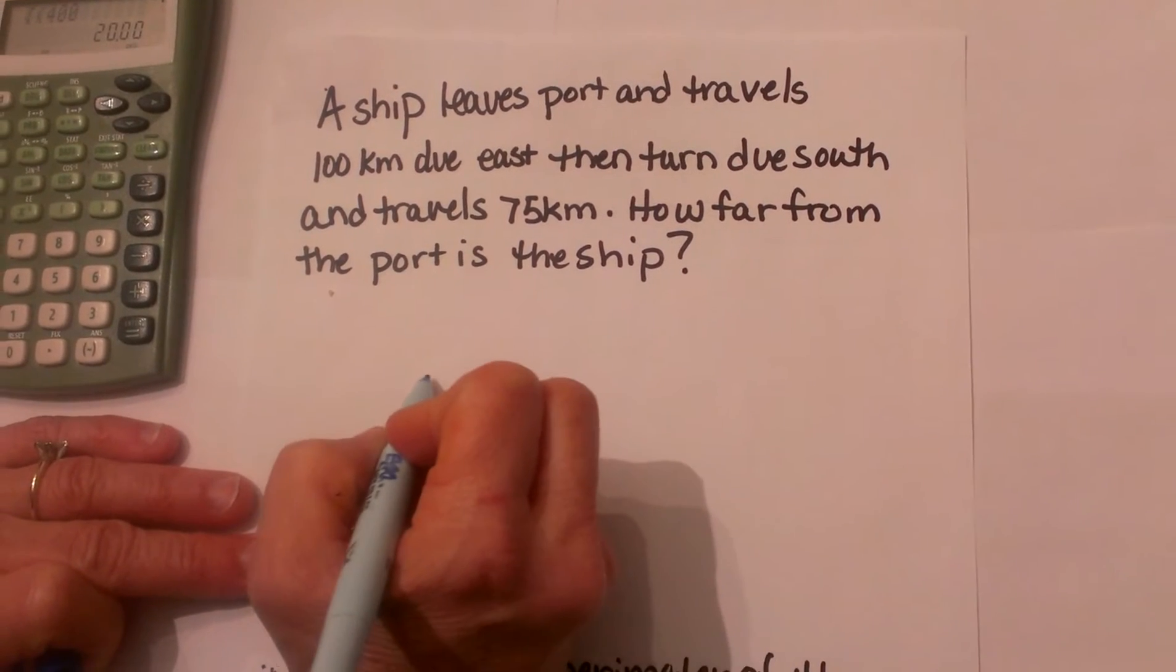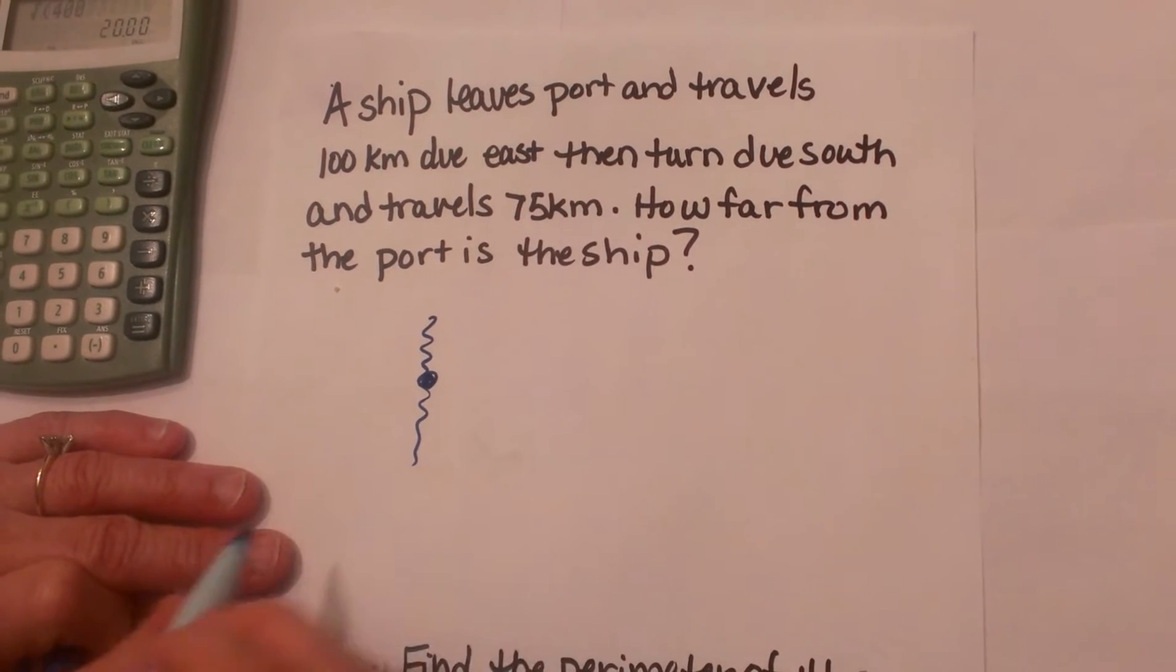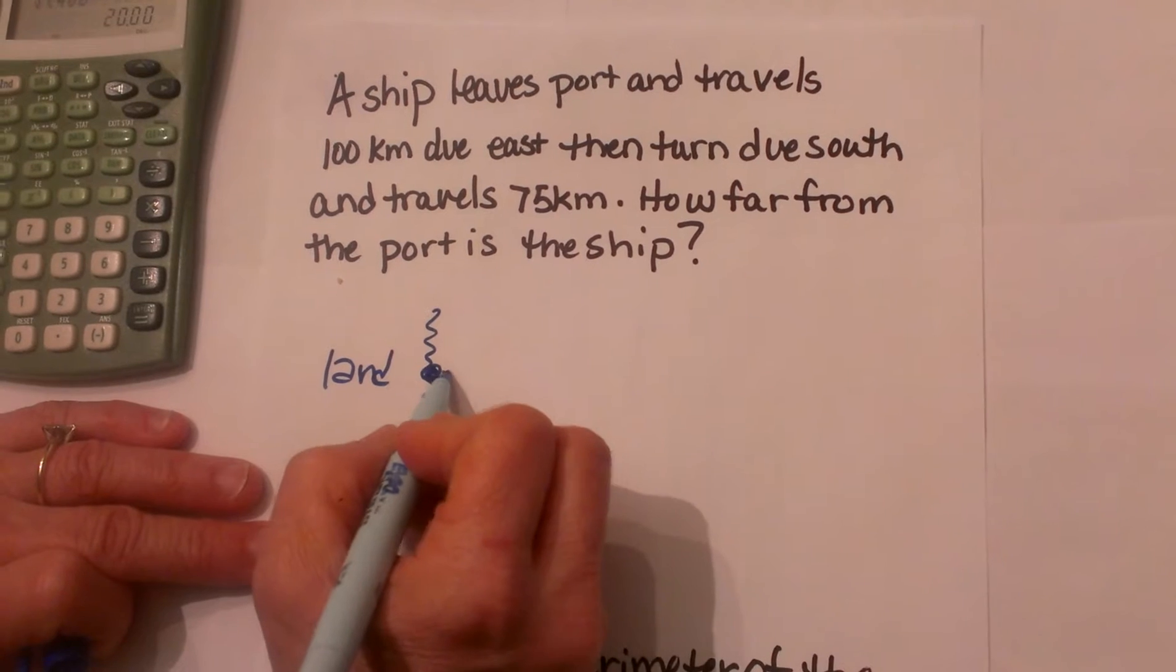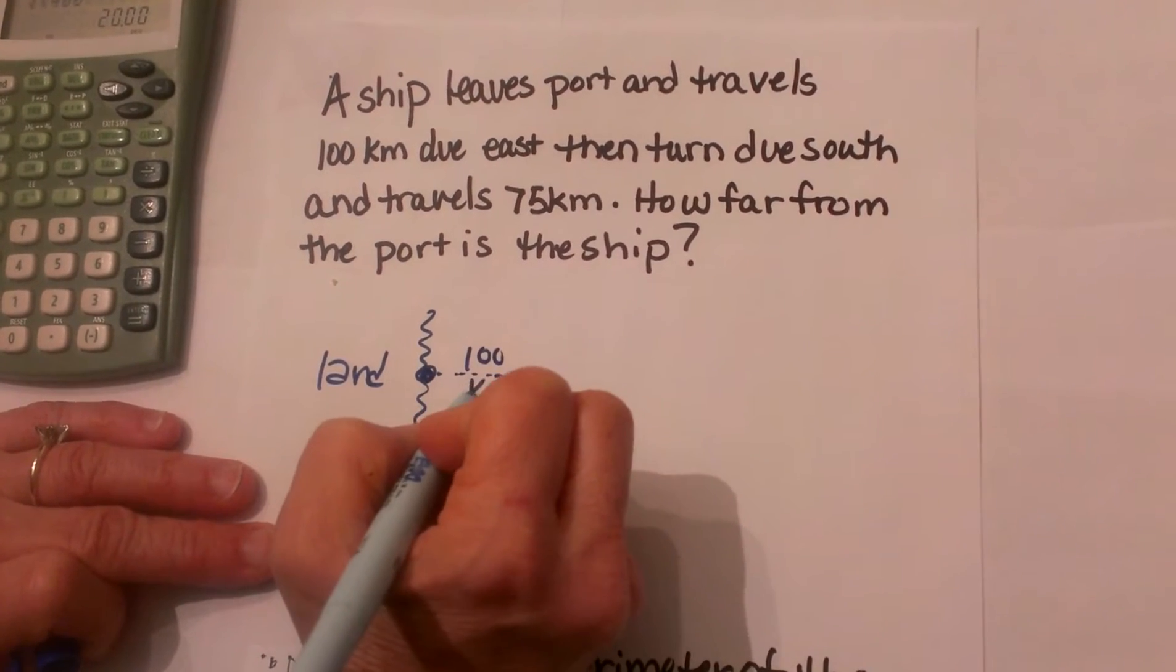So let's draw our picture. Here is our port, and it must be on a coastline somewhere, so there is land over here. We are going to travel due east, so the ship goes out due east 100 kilometers.